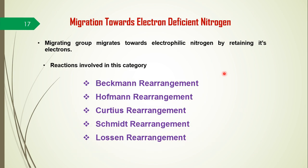Where the migrating group migrates towards electron-deficient nitrogen, retaining its electrons, the reactions include: Beckmann rearrangement (where ketoximes rearrange into corresponding amides or cyclic amides), Hofmann rearrangement, Curtius rearrangement, Schmidt rearrangement, and Lossen rearrangement. All these rearrangements fall under the electron-deficient nitrogen migration terminus category.